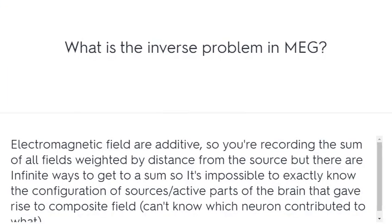What is the inverse problem in MEG? Electromagnetic fields are additive, so you're recording the sum of all fields weighted by distance from the source. But there are infinite ways to get to a sum, so it's impossible to exactly know the configuration of source parts of the brain that gave rise to the composite field.